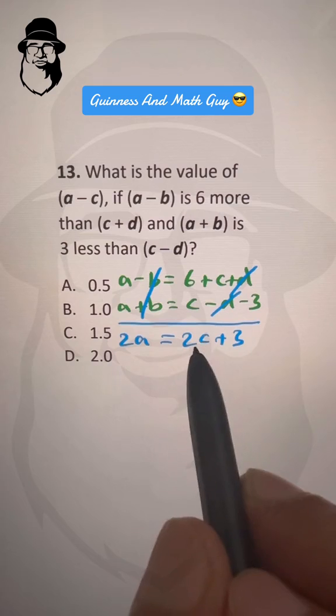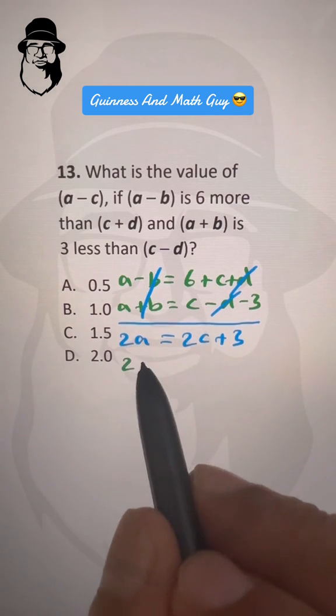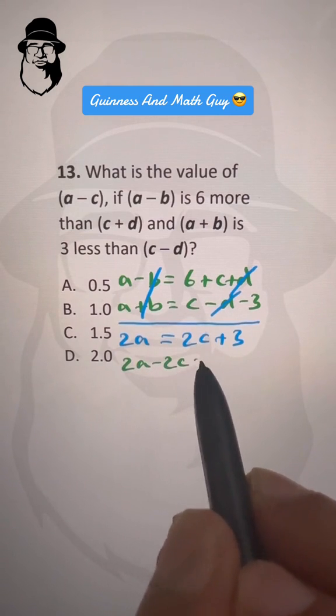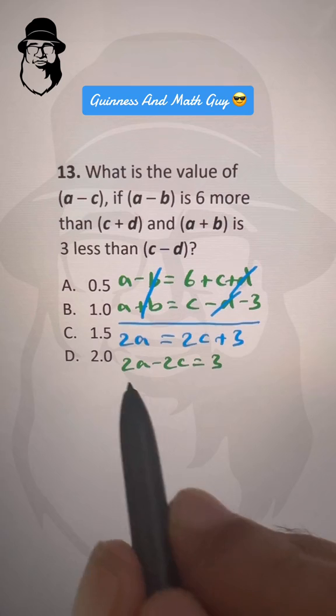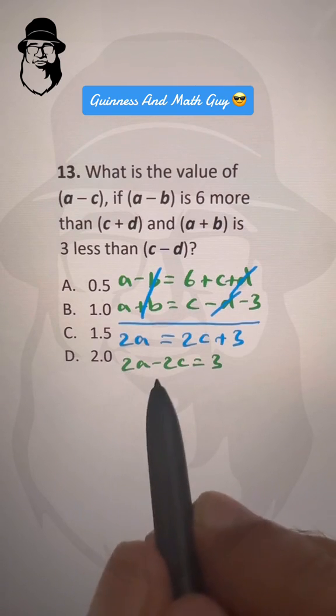Let's bring this 2c to the left side. It becomes 2a minus 2c equals 3. If we divide the whole equation by 2, we'll get rid of these twos.